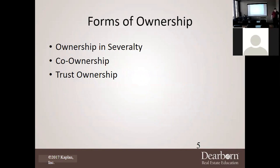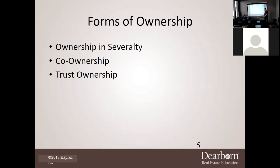When purchasing a property, you can own it in either ownership in severalty, co-ownership, or trust ownership. What is 'severalty'? Take off the '-ty' — it says 'several.' How many owners would be in an ownership in severalty? One. They trick you on that one — just because it says 'several' doesn't mean multiple. Ownership in severalty means one owner. Don't let that trick you.